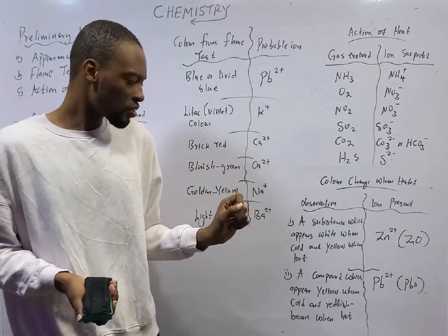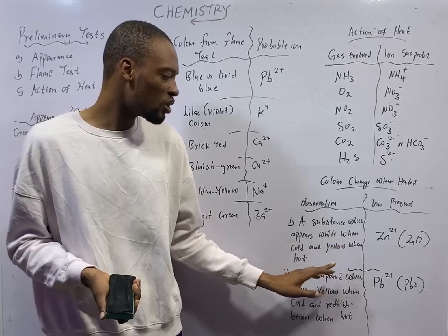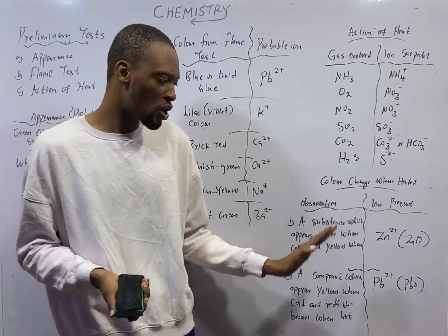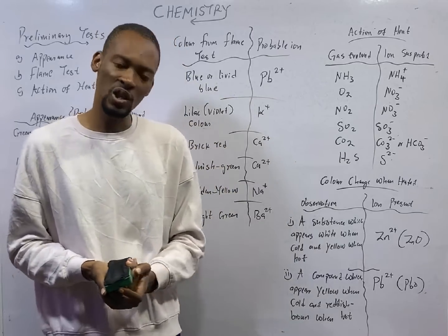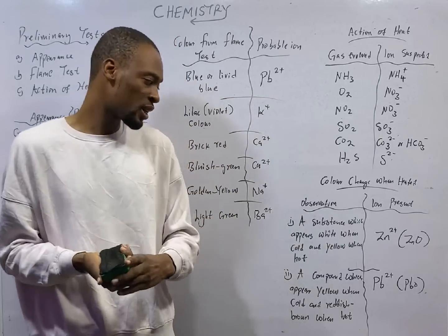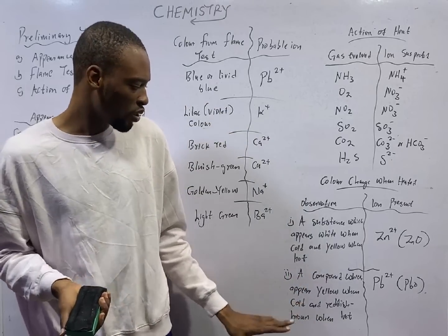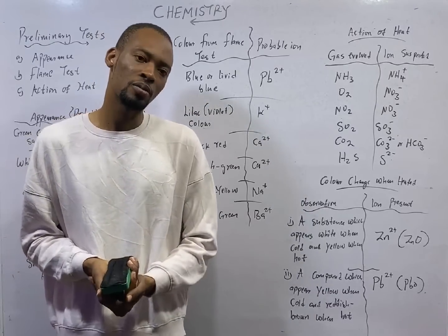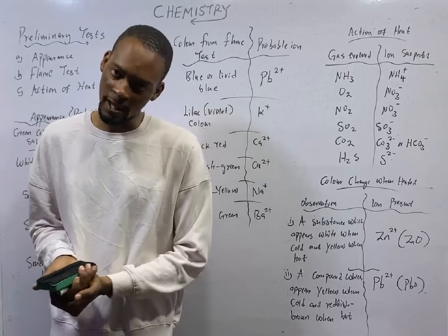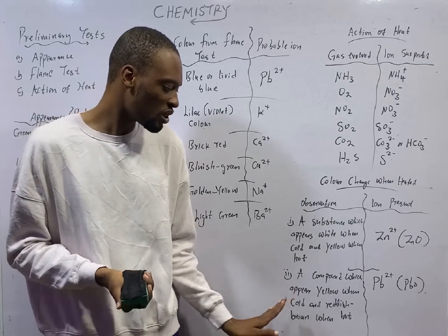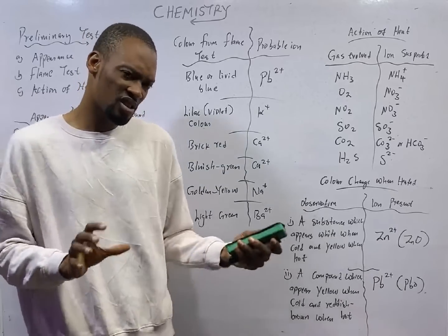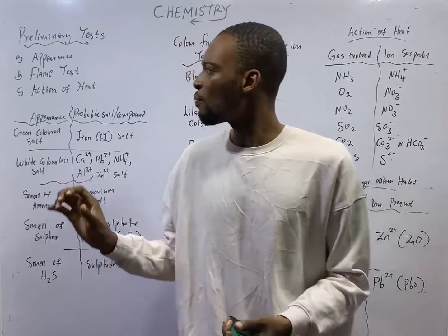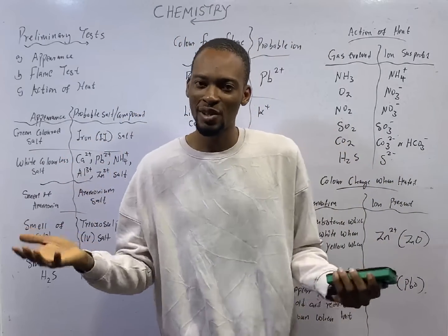When a substance which appears white when cooled becomes yellow when hot, we are suspecting zinc ions and we are suspecting the compound to be zinc oxide. A compound which appears yellow when cold and reddish brown when hot is likely going to be lead anion, PbO, lead oxide. A compound which appears yellow when cold and reddish brown when hot, there is presence of Pb2+. These are preliminary tests to look for what is being suspected.